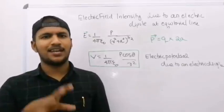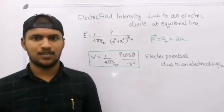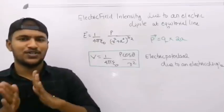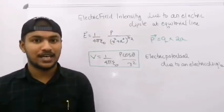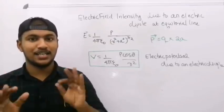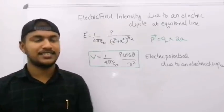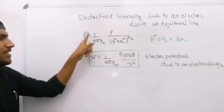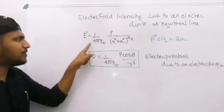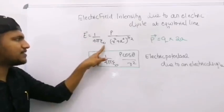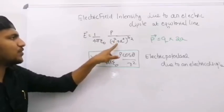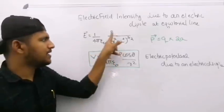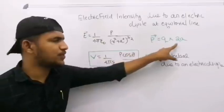With charge, presently electric field and magnetic field. In the line of charge, electric dipole is a vector. The intensity equation — the magnitude is equal to 1 by 4 pi epsilon 0, P by r square plus a square all raised to 3 by 2. P — what is the equation? Q into 2a.